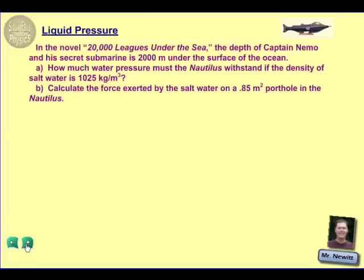So to figure out pressure, we have to take our pressure equation, which tells us that if we take the density of the water it's in, multiply it by the force of gravity and how deep it is, that will simply give us the pressure that the Nautilus is undergoing. So pressure is equal to